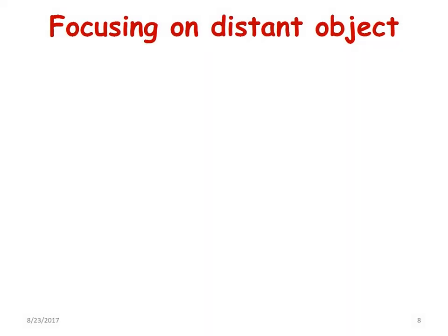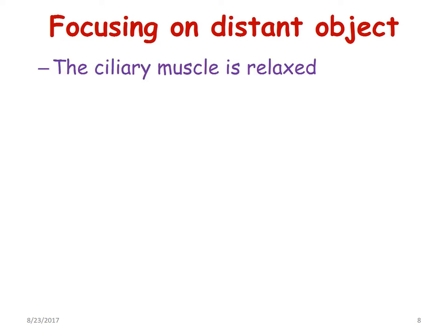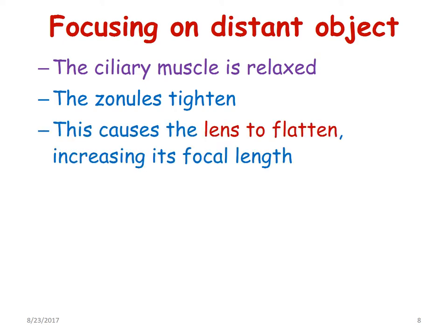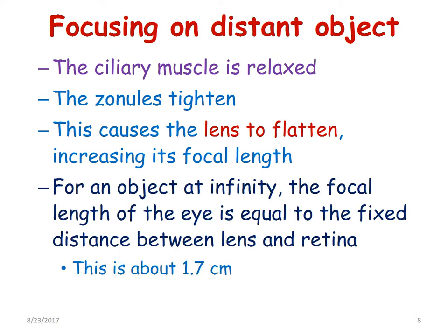When focusing on a distant object, the ciliary muscle is relaxed. The zonules will tighten up and this causes the lens to flatten, increasing its focal length. For an object at infinity, the focal length of the eye is equal to the fixed distance between the lens and the retina, which is about 1.7 cm.